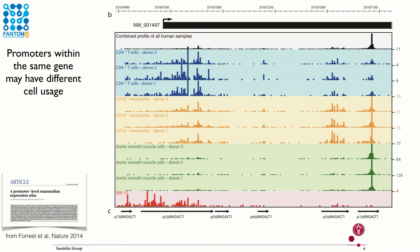Here we view an example of CAGE tags mapped around the annotated start site of the GALT1 gene. Each bar plot shows the CAGE tag intensity for each nucleotide for a set of cells, namely T cells, monocytes, aortic smooth muscle cells, and SW13 cells.